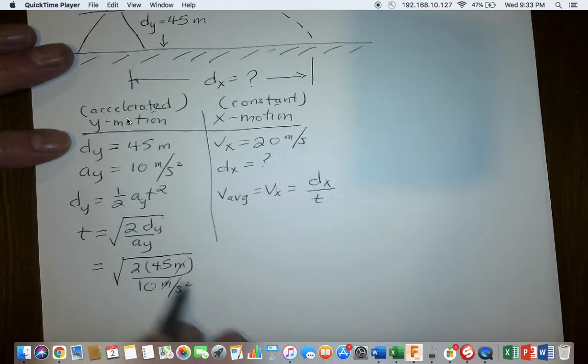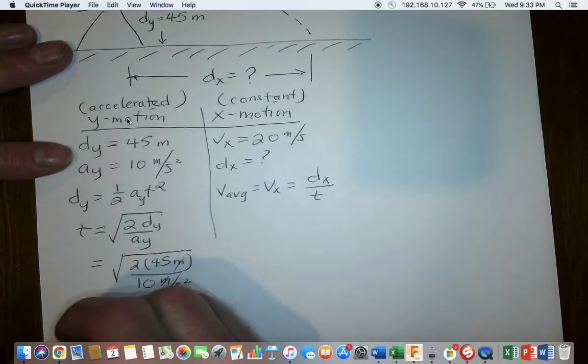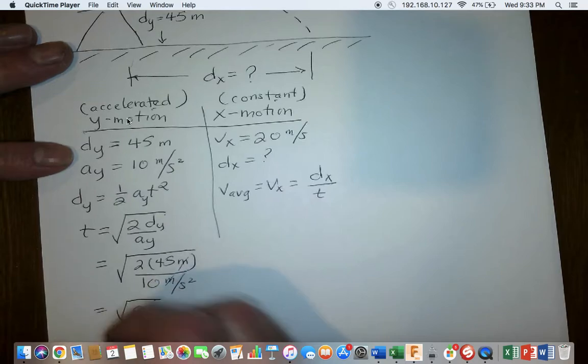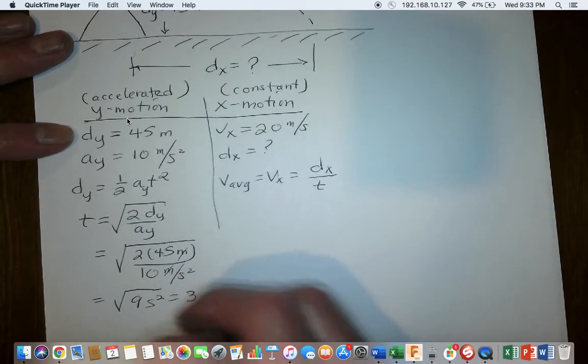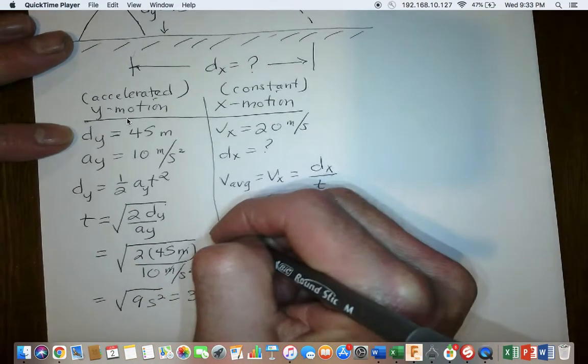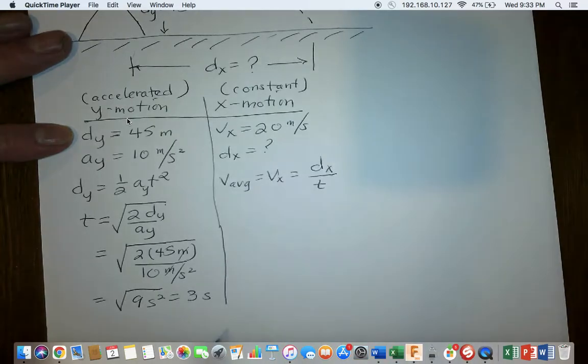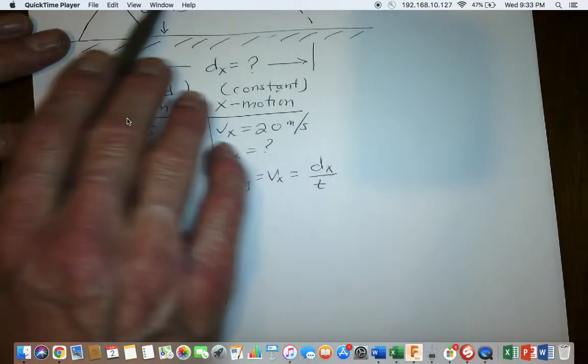90 divided by 10 is 9. The second squared comes up into the numerator. The square root of 9 is 3. The square root of seconds squared is seconds. What we have found is we have found that this ball is going to take 3 seconds to hit the ground.